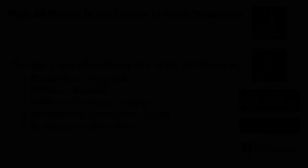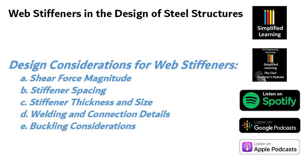Now let's talk about design considerations for web stiffeners. The design of web stiffeners in steel structures requires careful consideration of various factors to ensure their effectiveness and efficiency. The first design consideration is shear force magnitude. The magnitude of the shear force acting on the beam or girder determines the size and arrangement of the web stiffeners. Engineers must accurately calculate the design shear force to select an appropriate stiffener type and configuration. Next is stiffener spacing. The spacing between web stiffeners is crucial to their performance. Proper spacing prevents localized buckling and ensures that the stiffeners work cohesively to resist shear forces. Next is stiffener thickness and size. The dimensions and thickness of the stiffener plates or angles depend on the shear force and the structural design. Engineers must ensure that stiffeners are robust enough to handle the applied loads without failure.